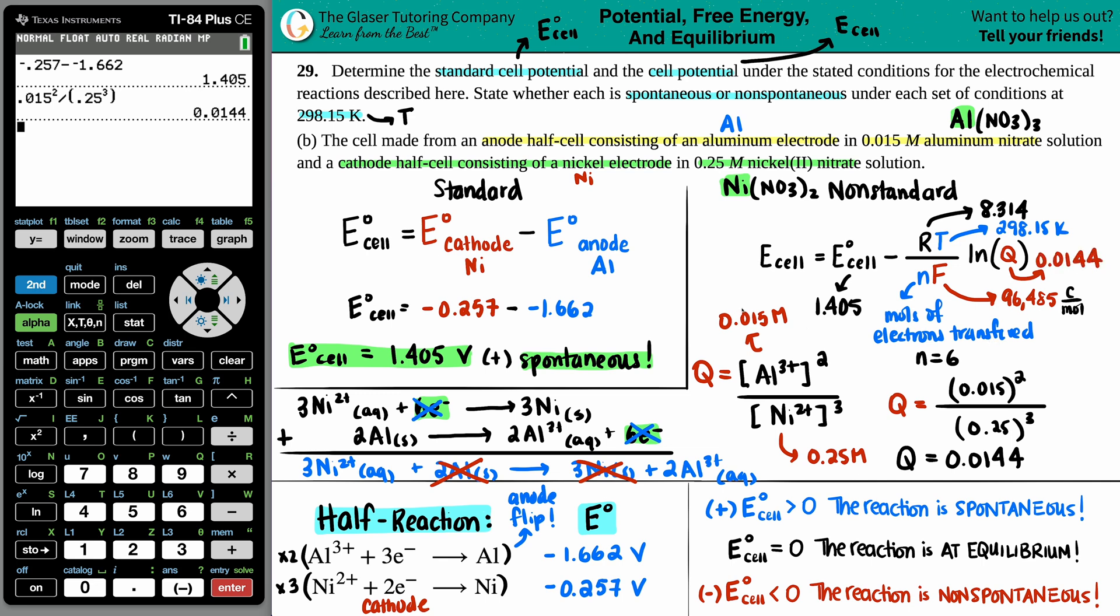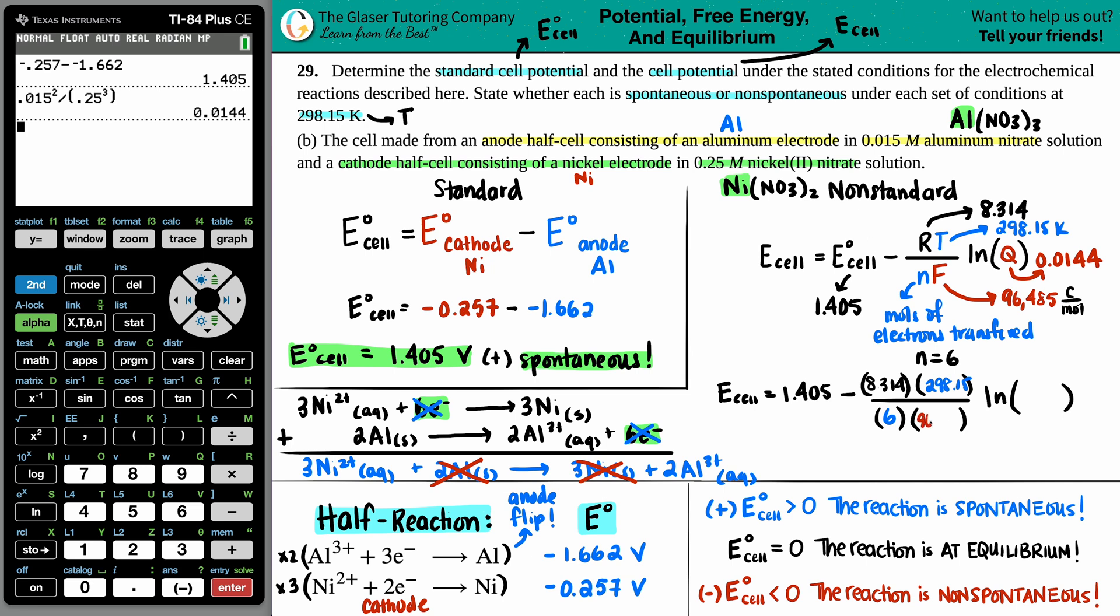So we've finally found out the Q value, 0.0144. So now pause the video if you need to, because I'm just going to erase all this Q information, because now we're just ready to plug in and solve for our E-cell. So bye-bye. We did all that work just to get the E-cell equal to, let's bring this down a little bit, 1.405 minus, I have the division sign, we have an LN value, I have the R, the T, the N, and the F. So R, just like we said before, was 8.314. The T was the 298.15. We found out that the N value was 6, and Faraday's constant is always 96,485, and we found out that the Q value was 0.0144.